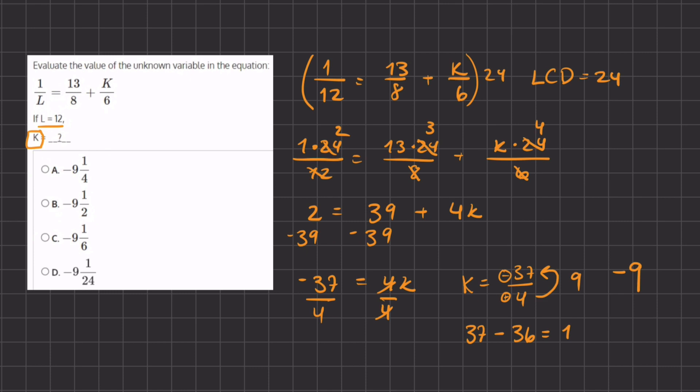We have negative 9 as our whole number because 4 goes into 37 nine times. When it goes in 9 times, we are at 36, so we have a remainder of 1. And our denominator remains at 4.